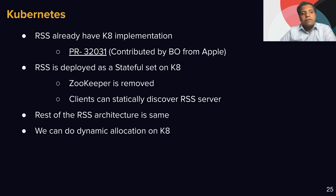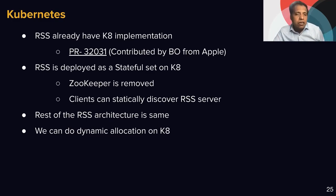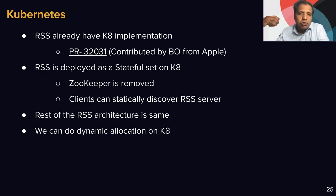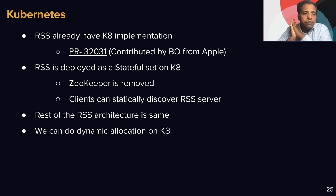The good news on Kubernetes: RSS already has a Kubernetes implementation — this is the PR contributed by Bo from Apple. RSS is deployed as a StatefulSet on Kubernetes. We have removed ZooKeeper from the Kubernetes implementation — clients can statically discover RSS servers, and Kubernetes makes sure those RSS servers are restarted if they go down. Clients can randomly fall back to another server if the first RSS server is not up. The rest of the RSS architecture is the same, and now we can do dynamic allocation on Kubernetes.